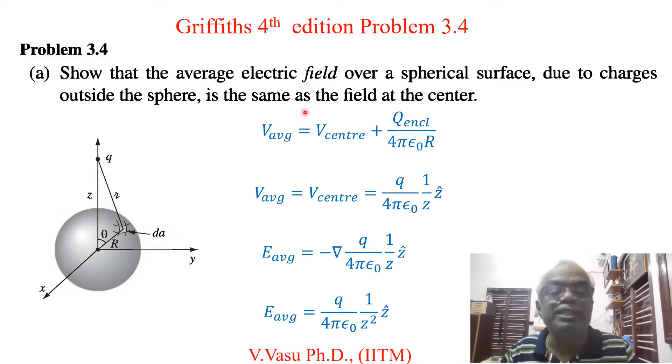In section A, the charge inside the sphere is zero. There is no charge, so naturally this term becomes zero. Then V_avg simply equals V_center which equals q/(4πε₀z), where z is the distance between the center and the charge q.